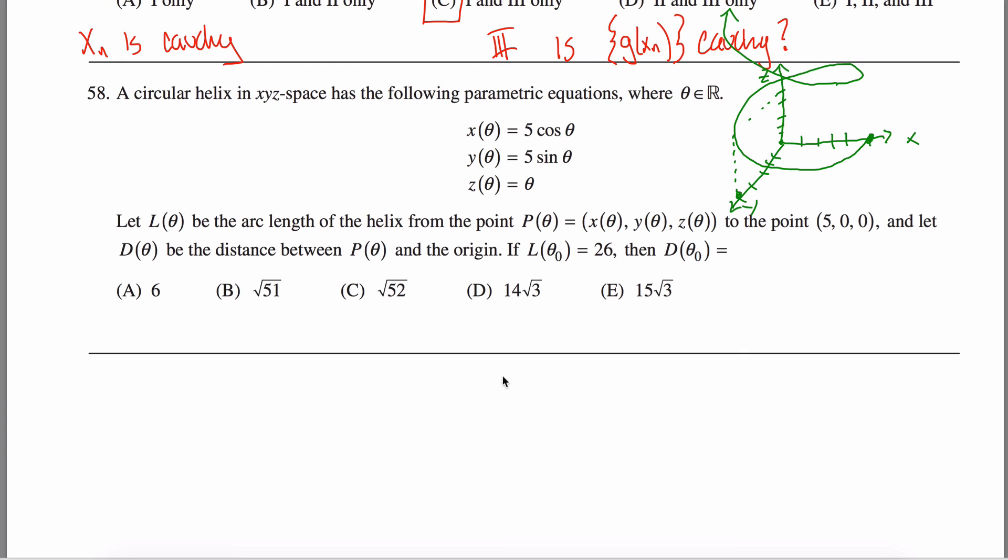What we have here are two different functions, or two different ideas, I suppose. We have the idea of distance and the idea of arc length. Distance talks about the distance, a straight line from a given point to a point on this helix. In this case, it's the distance from the origin, so right here to any point on the helix. Arc length, as I'm sure you know, talks about the distance if you traveled along this arc to a given point. And what I am told is that for some special theta, the arc length is 26, and I'm asked, what is the distance from that point to the origin?